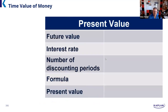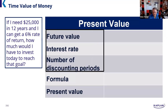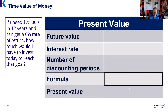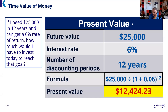If I need $25,000 in 12 years and I can get a 6% rate of return, how much do I have to invest today to reach this goal? You can't do this because you only have a simple function calculator on the test. The future value input was $25,000, interest rate was 6%, the number of discounting periods was 12 years — and we end up getting $12,424.23. That's what we need today if we want $25,000 twelve years from today, assuming that 6% return. That's present value.